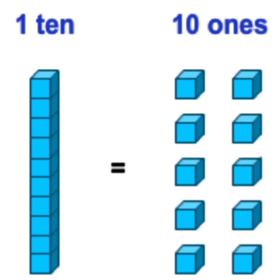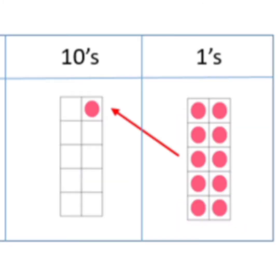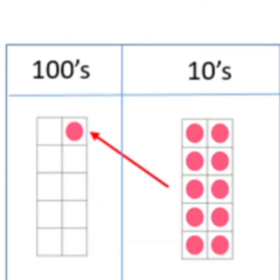Now look at this. Here all the 10 circles in the ones column add up to 1 ten in the next column. Same way if we place 10 circles in the tens column, it becomes what? It is 100. 10 times 10 is 100.